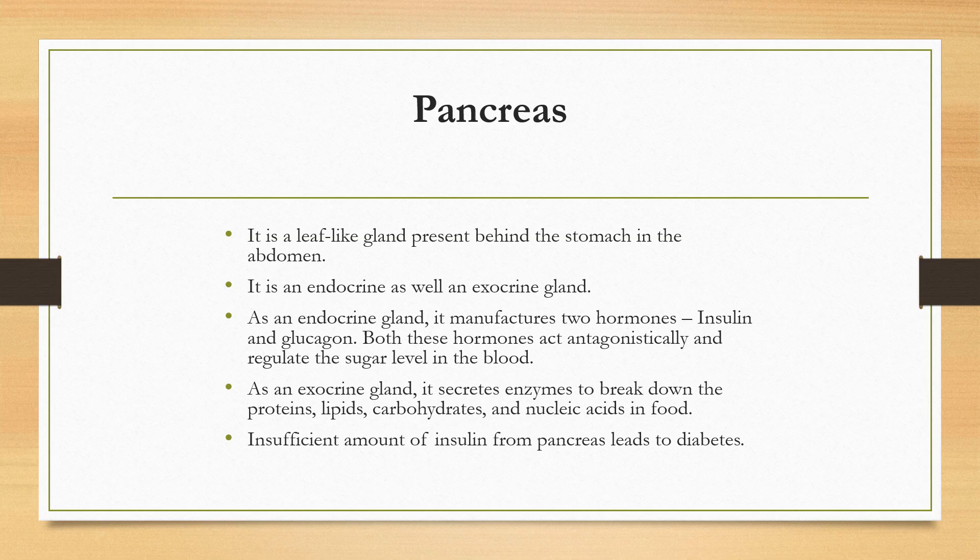Insufficient insulin from the pancreas leads to diabetes. The function of insulin is to lower the blood sugar level. Deficiency of insulin hormone causes a disease known as diabetes, characterized by large quantities of sugar in the blood and even urine. If the pancreas does not produce sufficient insulin, the sugar level in the blood rises, causing harmful effects to the body. Common diabetes can be controlled by controlling diet, reducing weight, doing physical exercise and taking medicines. Persons with severe diabetes are treated by giving insulin injections.